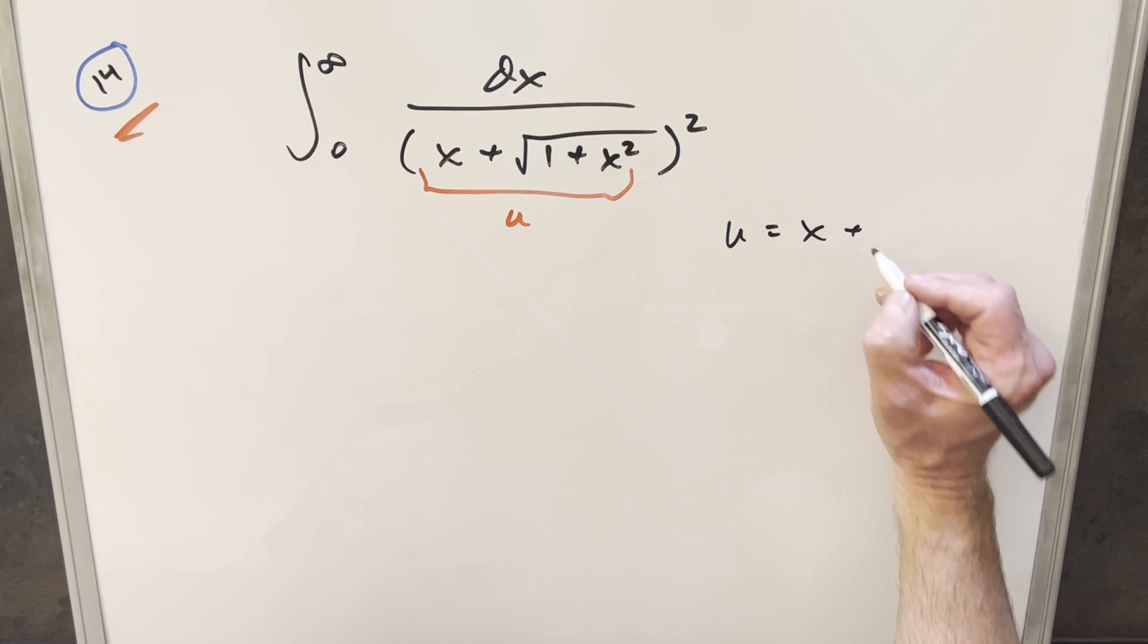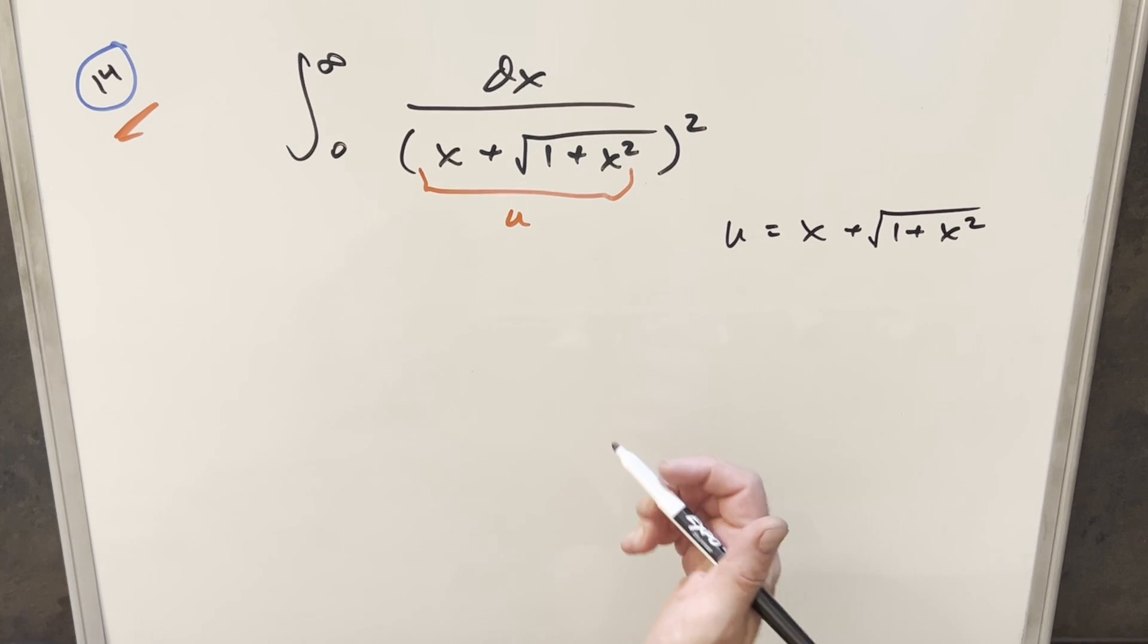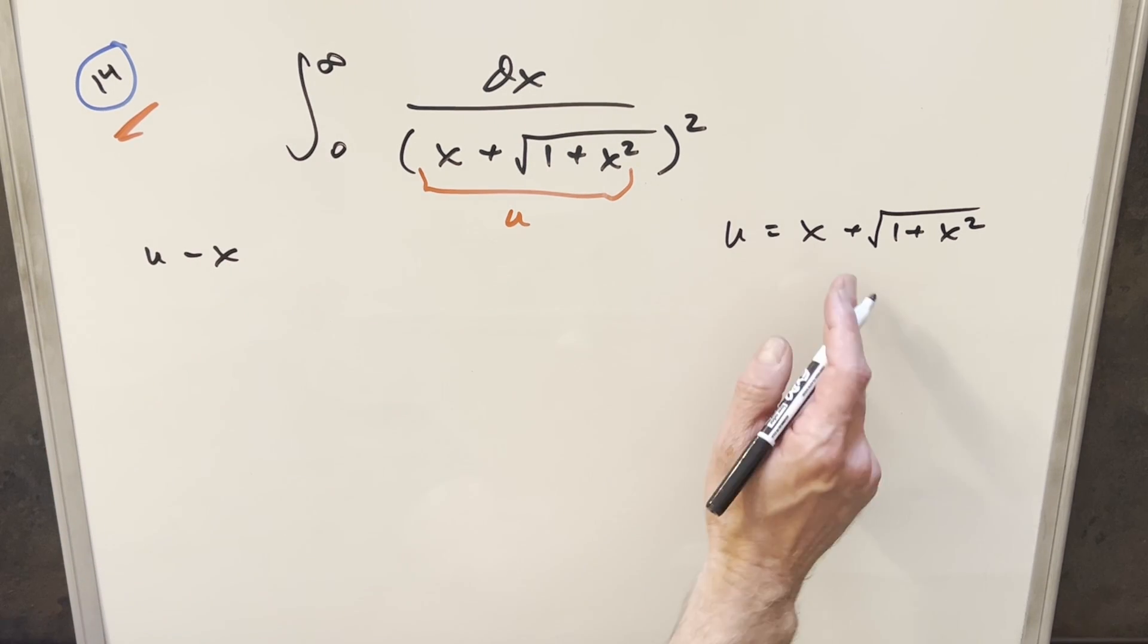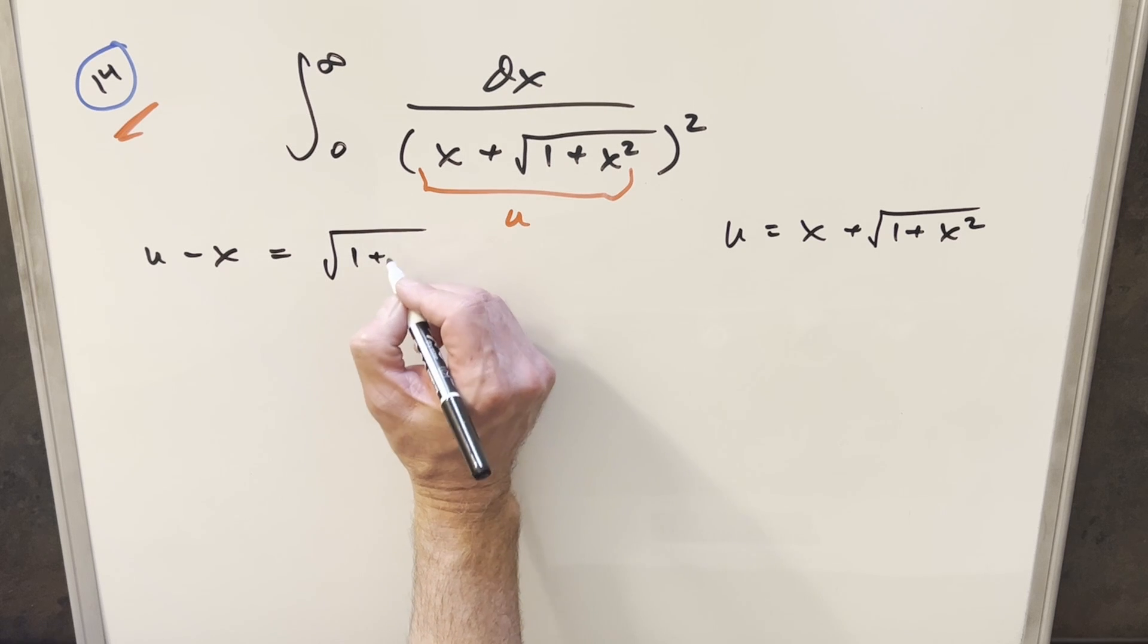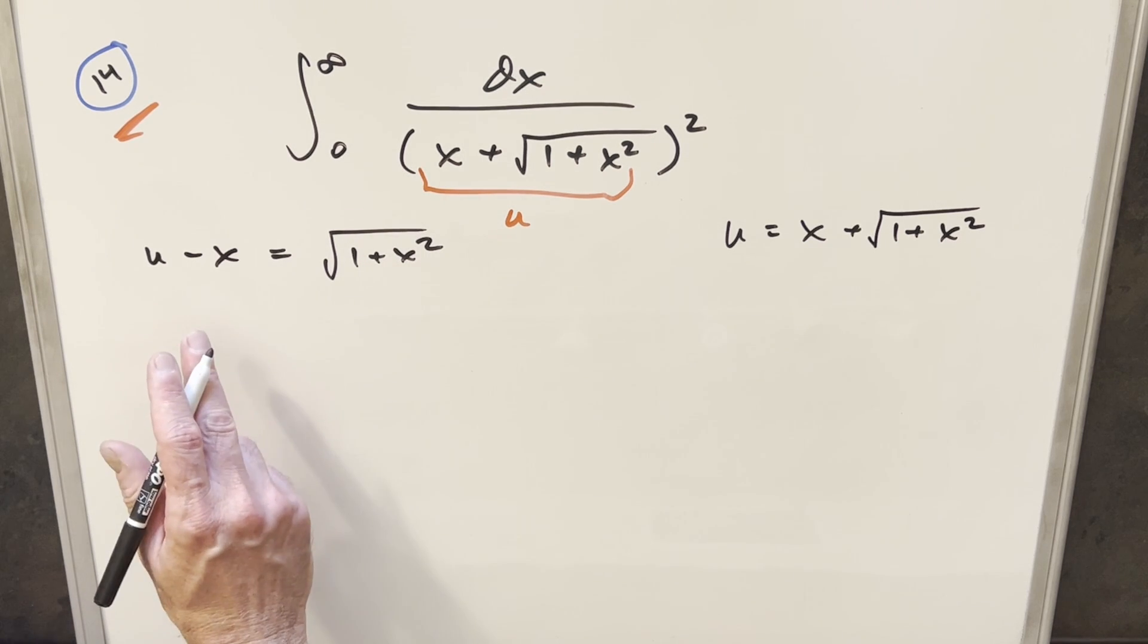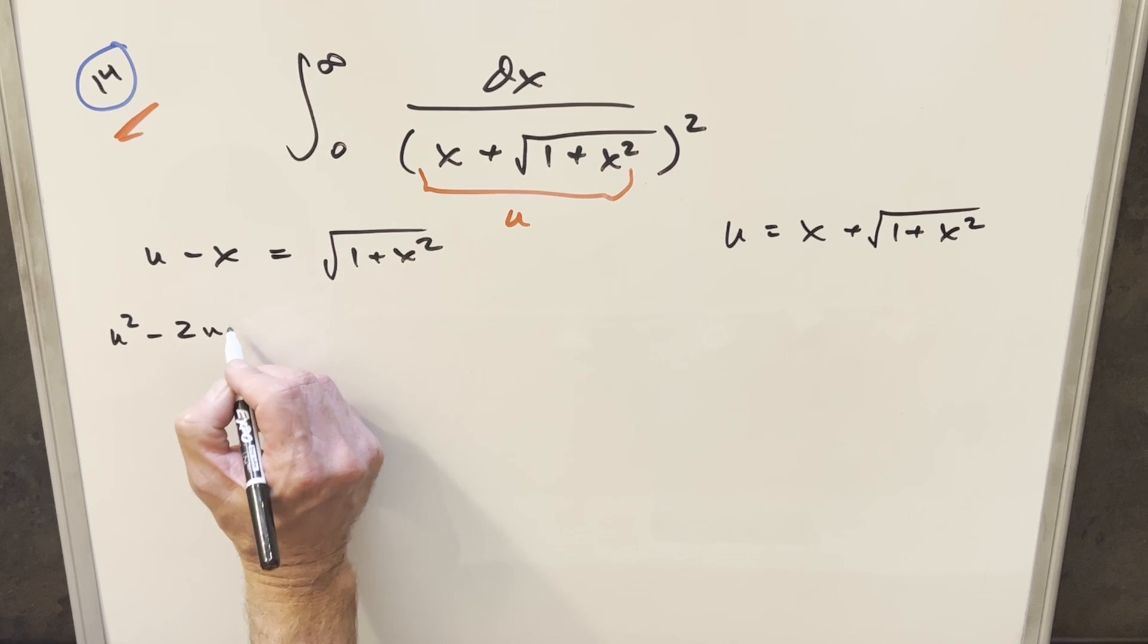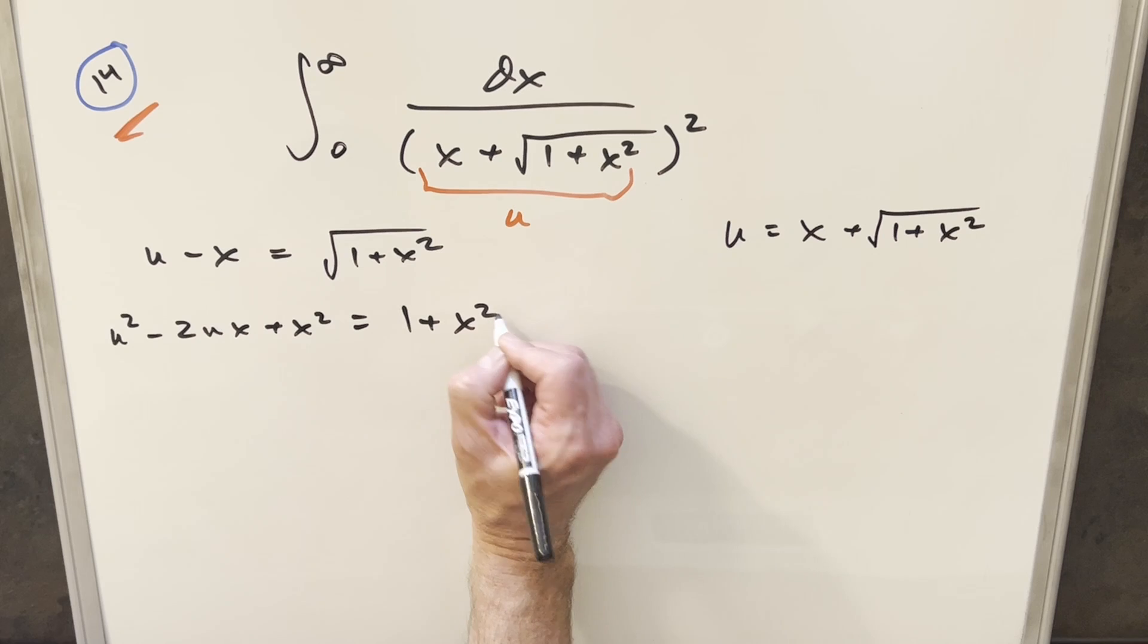So we're going to substitute u for x plus square root 1 plus x squared. And before I take a derivative, I actually want to solve for x, so let's rearrange this. Subtracting x on both sides, we'll get u minus x equal to square root 1 plus x squared. Then that's going to allow me to square both sides. So if I square this out, we get u squared minus 2u x plus x squared. And then here, when we square this, we're just going to get 1 plus x squared.